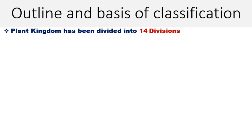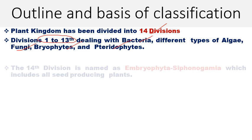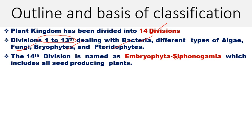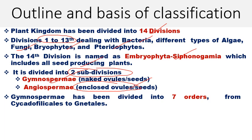For the outline of classification, the plant kingdom was divided into 14 divisions. Divisions 1 to 13 deal with bacteria, different types of algae, fungi, bryophytes, and pteridophytes. The 14th division, named Embryophyta Siphonogamia, includes all seed-producing plants, divided into two subdivisions: Gymnospermae — having naked ovules or seeds — and Angiospermae — having enclosed ovules or seeds.